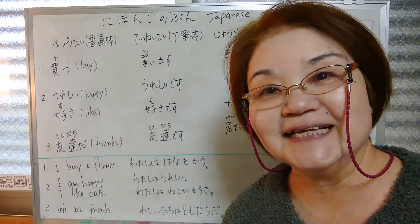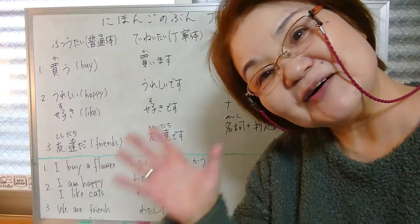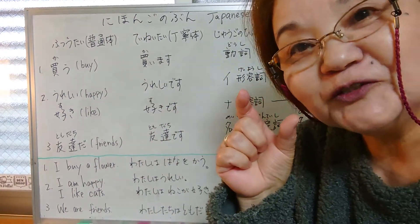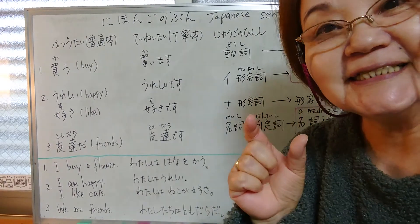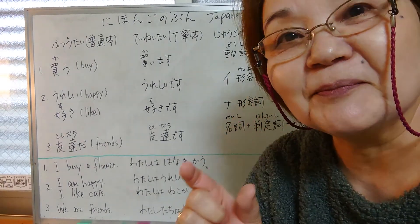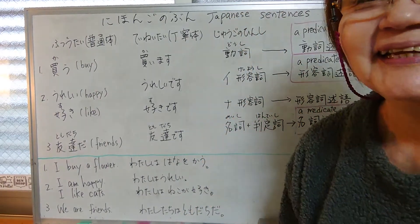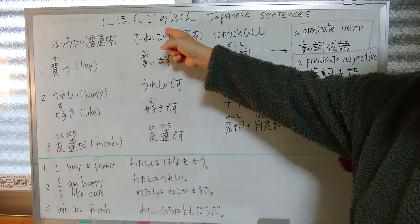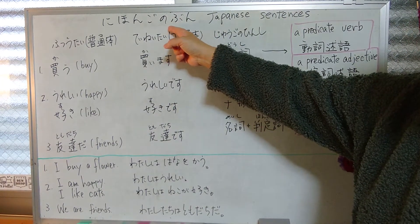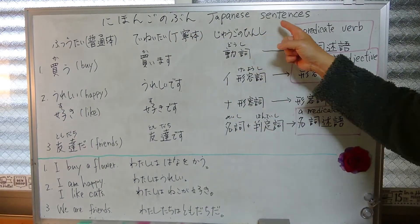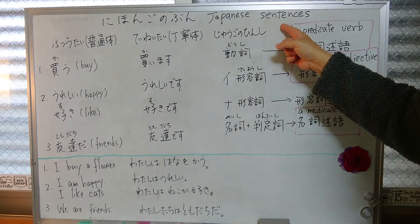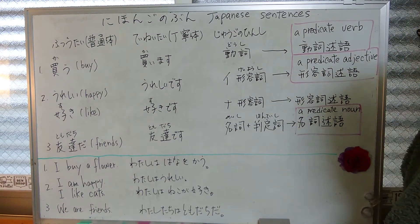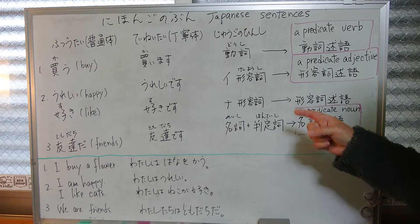Konnichiwa! Ohisashiburi desu — long time no see. How have you been? Today is a very short video of Japanese sentences, just a grammar lesson. Okay, let's go! 今日のレッスンは日本語の文 — Japanese sentences. The important part to communicate is called jutsugo — predicate.